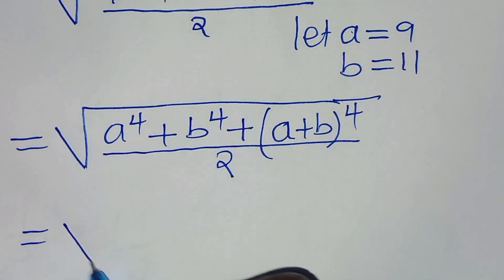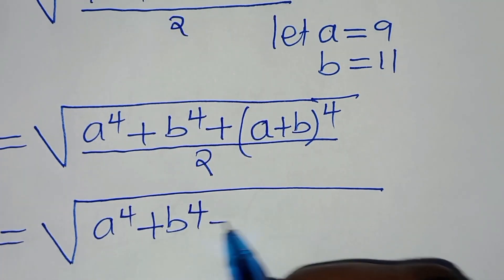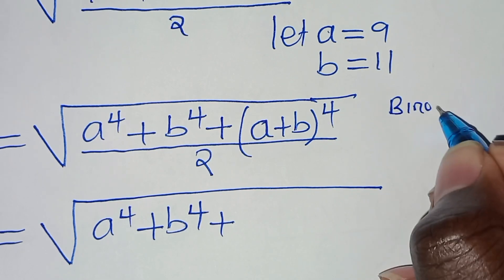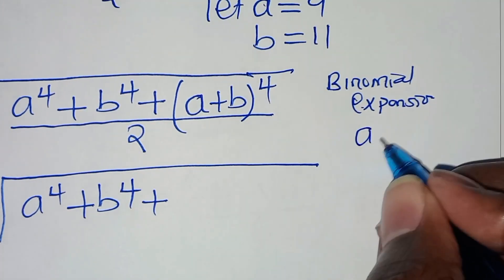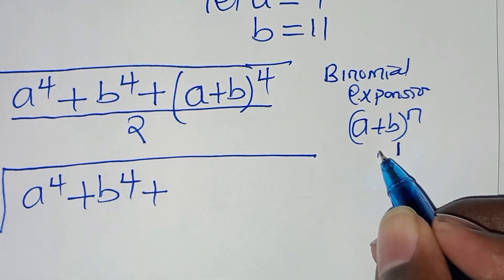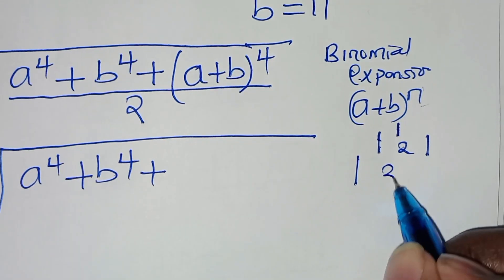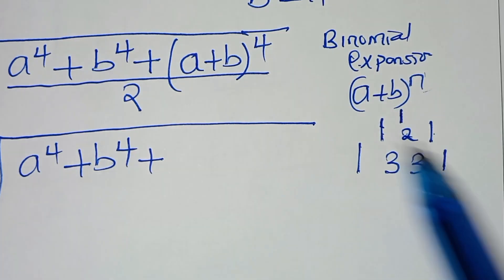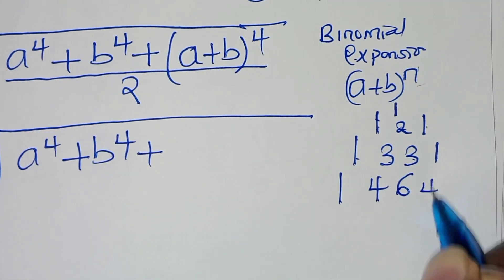The next step: we have the square root of a to the power 4 plus b to the power 4, plus (a+b) raised to the power 4. We can expand (a+b)^4 by applying binomial expansion. For (a+b)^n, using Pascal's triangle: when n=2, coefficients are 1, 2, 1; when n=3, they are 1, 3, 3, 1; and when n=4, the coefficients are 1, 4, 6, 4, 1.